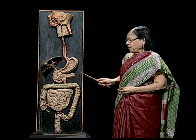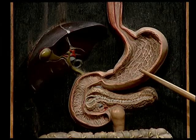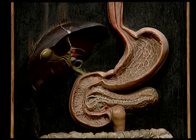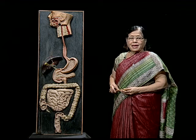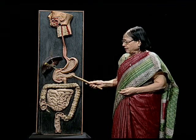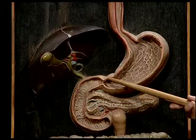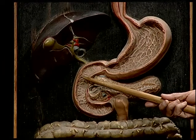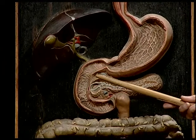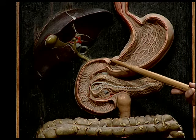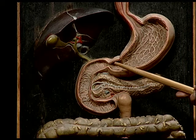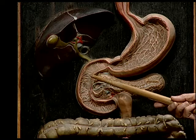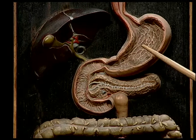Once food reaches the stomach, churning takes place, mixing of enzymes, and digestion begins. At this point there is a pyloric sphincter, and when food is pushed to the duodenum — the next part of the alimentary canal — there is again a sphincter. After this, food reaches the duodenum and should not come back to the stomach.